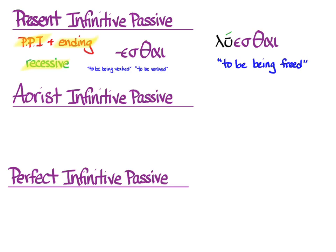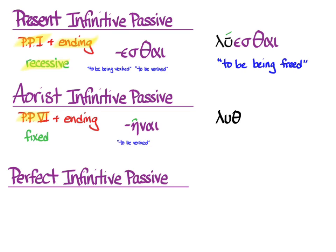The aorist infinitive passive comes from the sixth principal part, as do all aorist and passive things, and the ending is -ani. Accent is fixed right there on the ending — a circumflex on the eta. The default translation is 'to be verbed.' So we take our sixth principal part unaugmented, luth, add the ending with the accent, and you get luestheni — 'to be freed.'